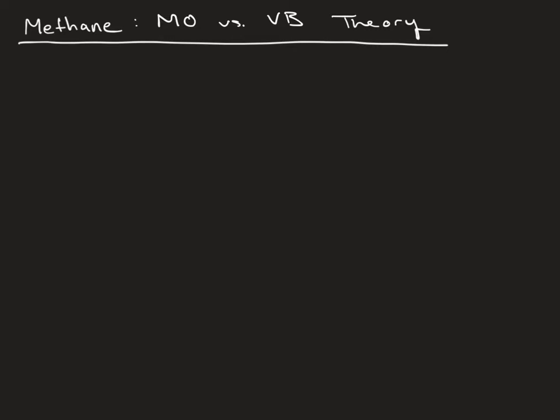In organic chemistry you're introduced to the concept that methane can be described using four equivalent CH bonds, thought of as localized sp3 hydrogen 1s bonding combinations. What we're going to do is describe the bonding in methane from the standpoint of molecular orbital theory, which yields a delocalized scheme.